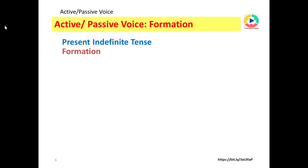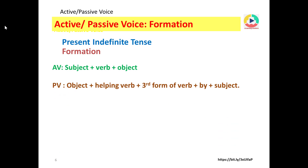Let's see the formation of sentences in present indefinite tense. In active voice: subject + verb + object. In passive voice: object + helping verb + third form of verb + by + subject.